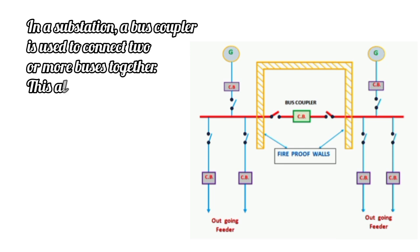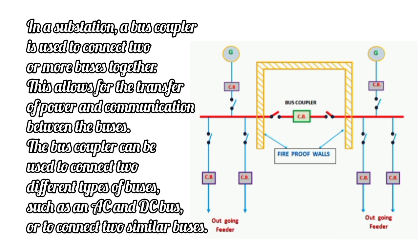In a substation, a bus coupler is used to connect two or more buses together. This allows for the transfer of power and communication between the buses. The bus coupler can be used to connect different types of buses, such as AC and DC bus, or to connect similar buses.